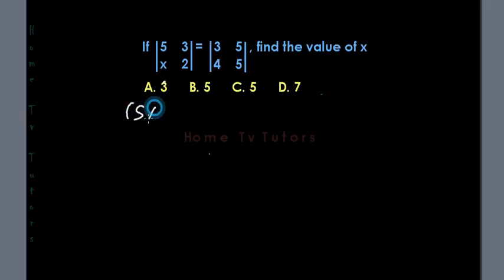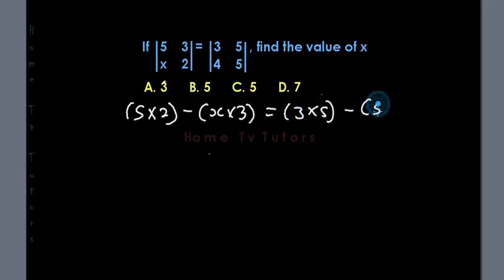That is 5 times 2 minus bracket x times 3, which is equal to bracket 3 times 5 minus bracket 5 times 4. Which gives us 5 times 2, that's 10, minus x times 3, that's 3x, equals 15 minus 20.